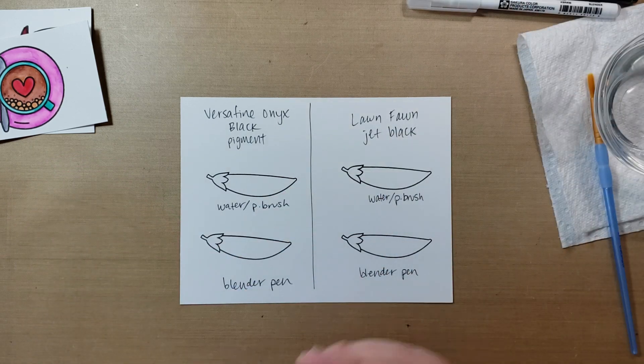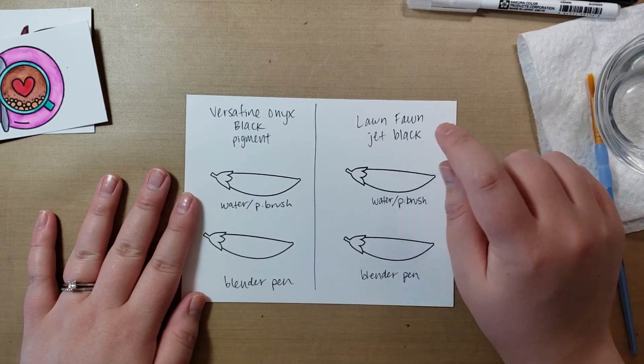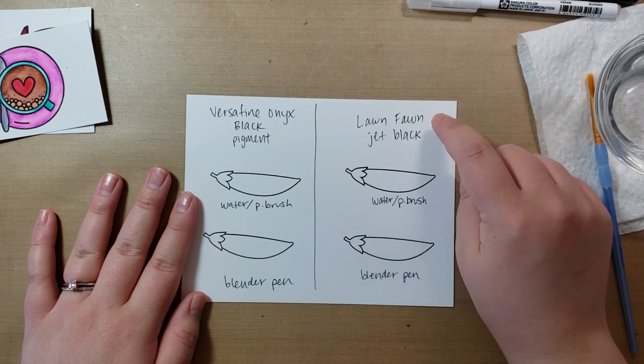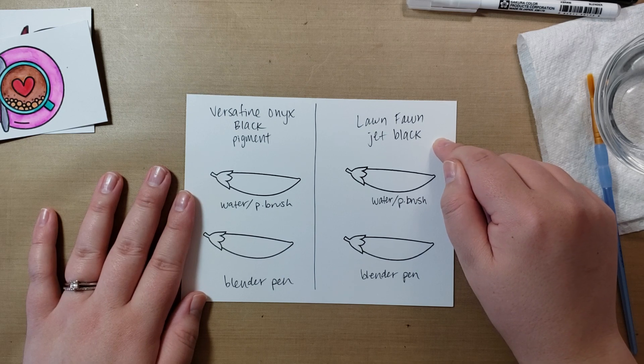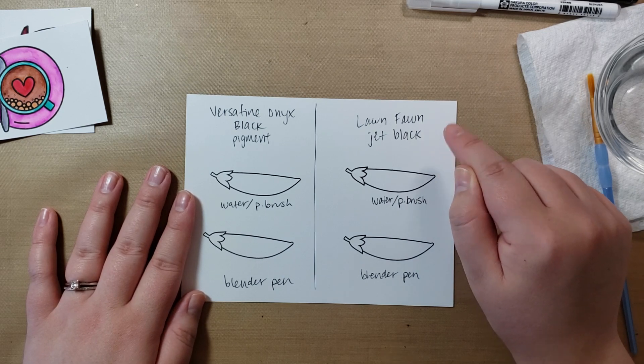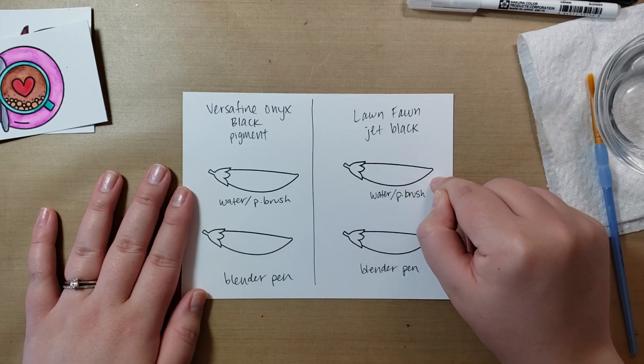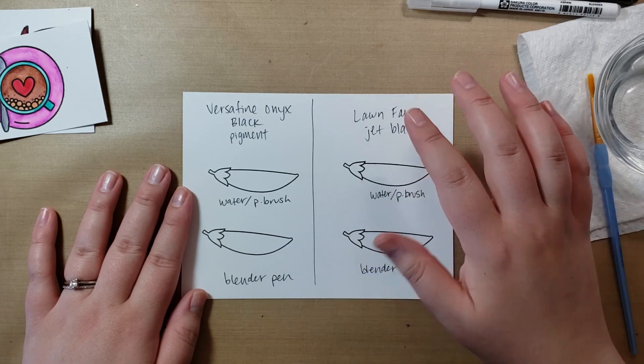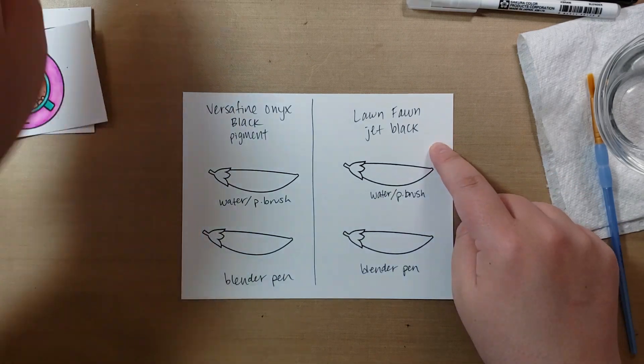So I'm going to use only Zig's in this, because I want to show you that I didn't know, and I just got this. I do like the Lawn Fawn Jet Black a little better in the moment than my Memento. Maybe my Memento is just getting old, and I need a new fresh pad. I really like the crisp black images that I'm getting stamped out of the new Lawn Fawn Jet Black.